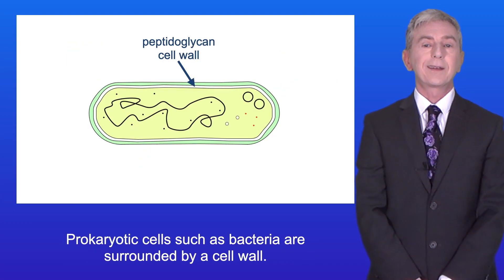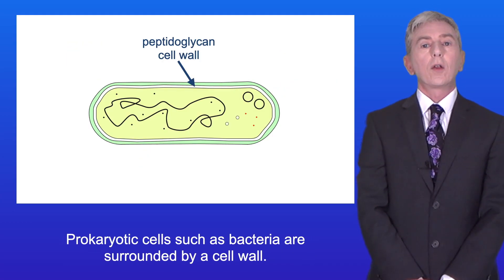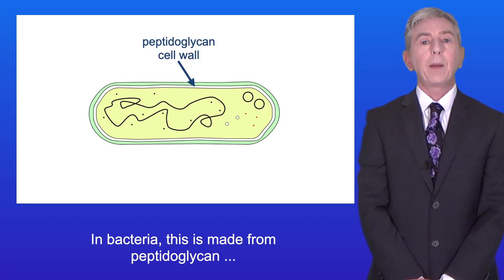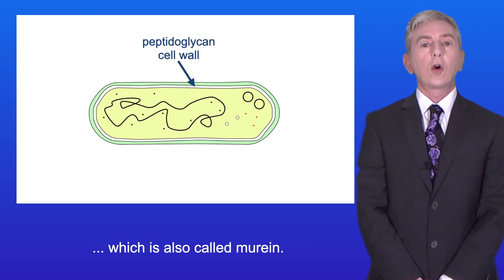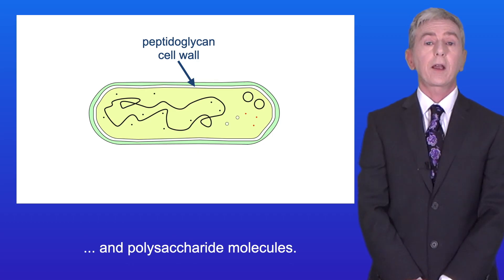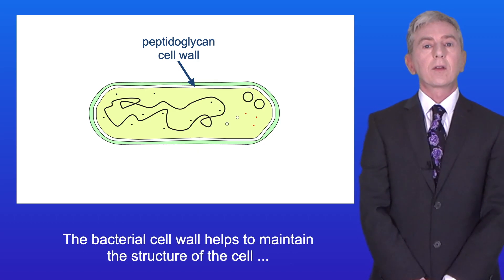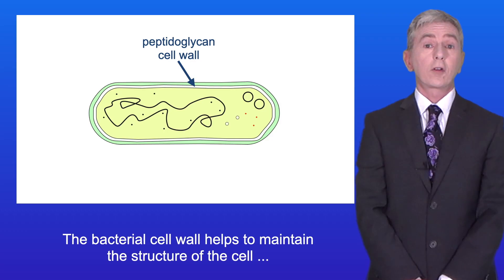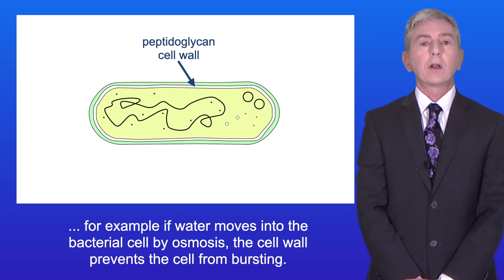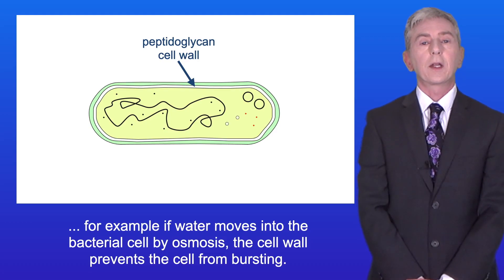Prokaryotic cells such as bacteria are surrounded by a cell wall. In bacteria this is made from peptidoglycan, which is also called murein. Peptidoglycan is a polymer formed between peptides and polysaccharide molecules. The bacterial cell wall helps to maintain the structure of the cell — for example, if water moves into the bacterial cell by osmosis, the cell wall prevents the cell from bursting.